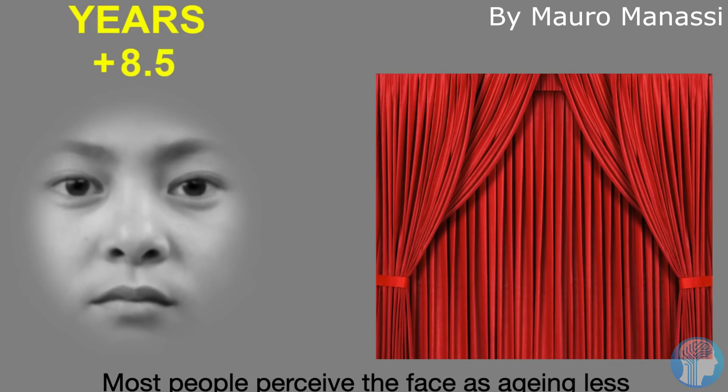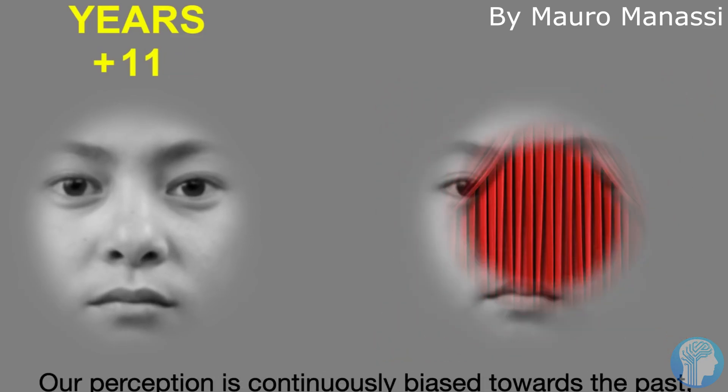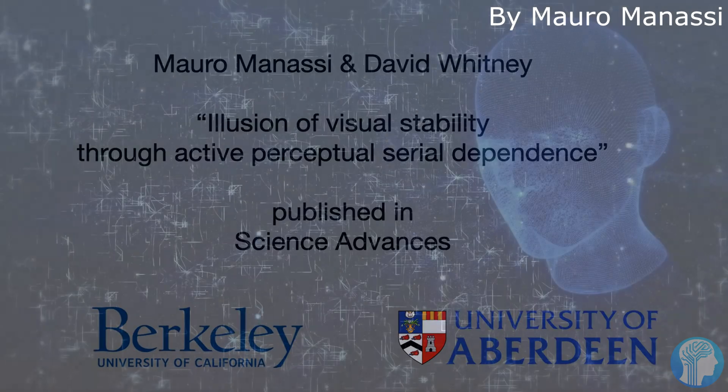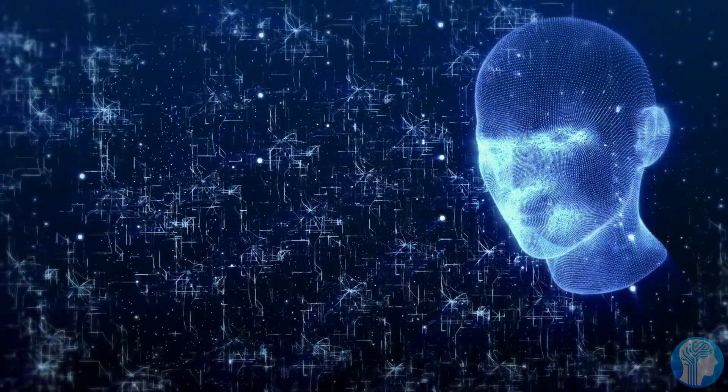To demonstrate how this stabilizing mechanism works, we built an illusion. In the video below, the left half of the face progressively ages for 30 seconds, although it's tough to discern the full degree of the age difference. In fact, spectators mistakenly believe that the face is aging more slowly than it is.